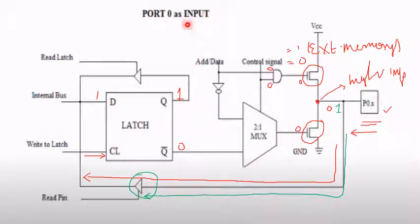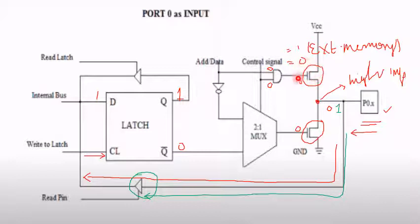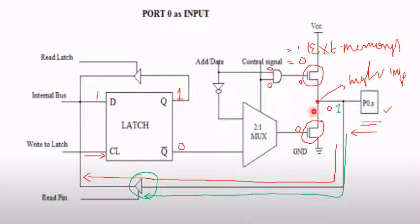While Port 0 is acting as an input port, a 0 is coming through the mux and the control signal is already 0 for input-output operation. So we get 0 and 0 at the FET input. Since 0 is obtained at both FETs, both are open circuit, and if you measure the voltage at this point, it will be in high impedance state — it won't get a 0 or a 1 input, meaning it won't be low or high. It will be in the third state, that is, high impedance state. So now Port 0 is ready for acting as an input port.